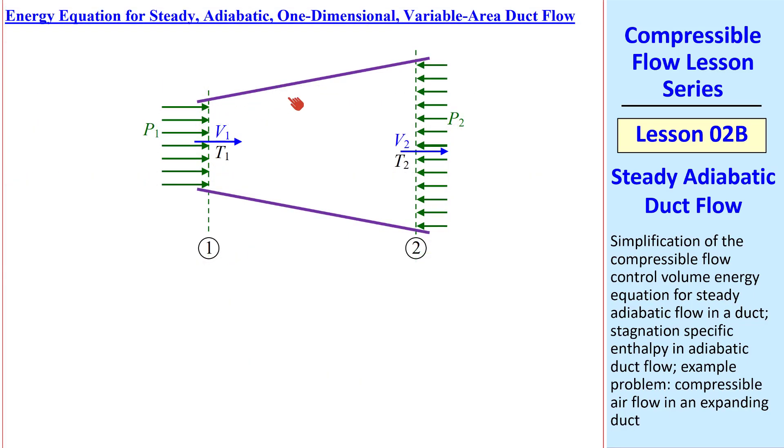So let's consider the energy equation in a duct like this. We approximate the flow as steady adiabatic, meaning no heat transfer. One-dimensional, meaning we're using the average speeds here across the duct, ignoring the effect of boundary layers.